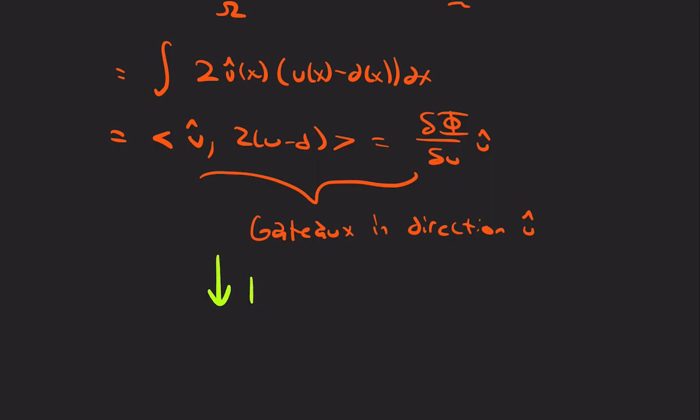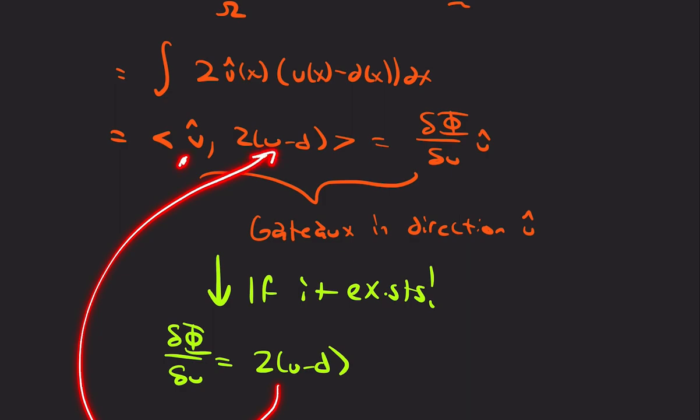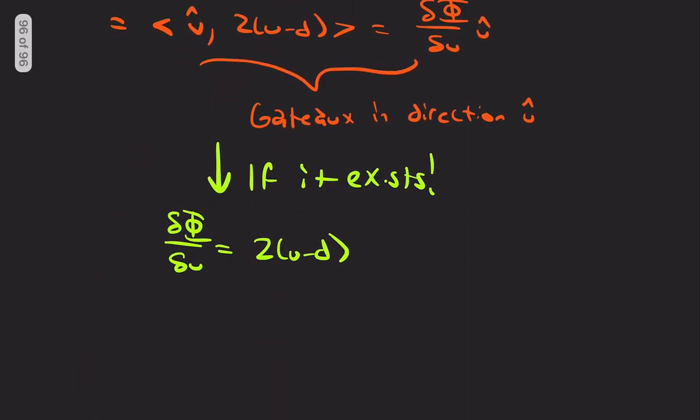And so, at that point, this is the v. And then, I'm just going to say if it exists, we write that this is just 2u - d, knowing that what we mean by that is dot it with u-hat with that function.